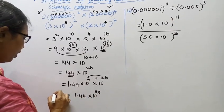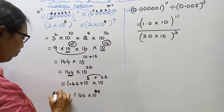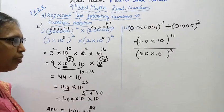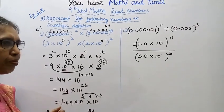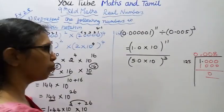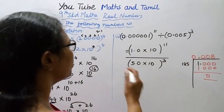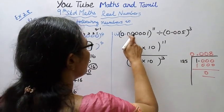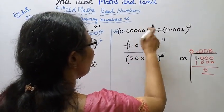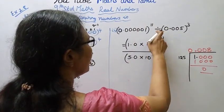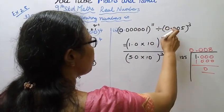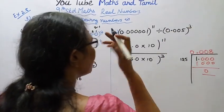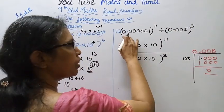That is the answer for the first sub-division. Now the second sub-division: zero point zero zero zero zero zero zero one, the whole power of eleven, divided by zero point zero zero five, the whole power three. Let's work this out.